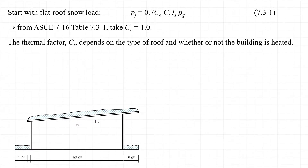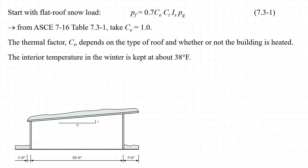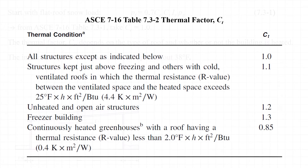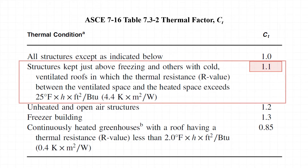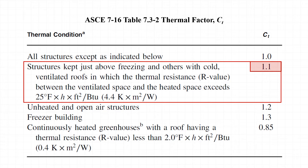The second factor is the thermal factor, C sub t, which depends on whether the building is heated and whether the roof is insulated and ventilated. This garage is only moderately heated in the winter with an interior temperature kept just above freezing. Referring to Table 7.3-2, the second thermal condition applies and we take C sub t equal to 1.1.